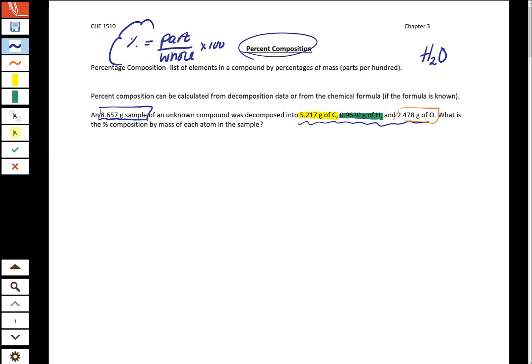We'll just start with carbon. So we'll take our carbon and we will put the number of grams of carbon that are given and divide that by the mass of the sample, and then multiply that by 100. So when this happens we should get about 60.26 percent carbon.